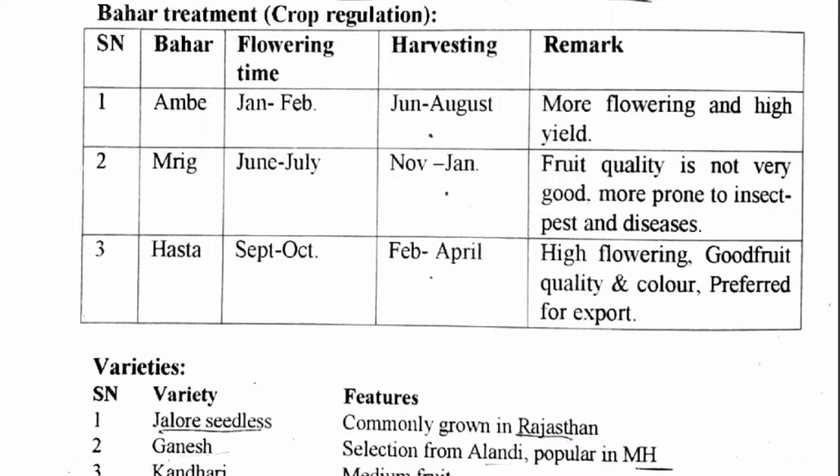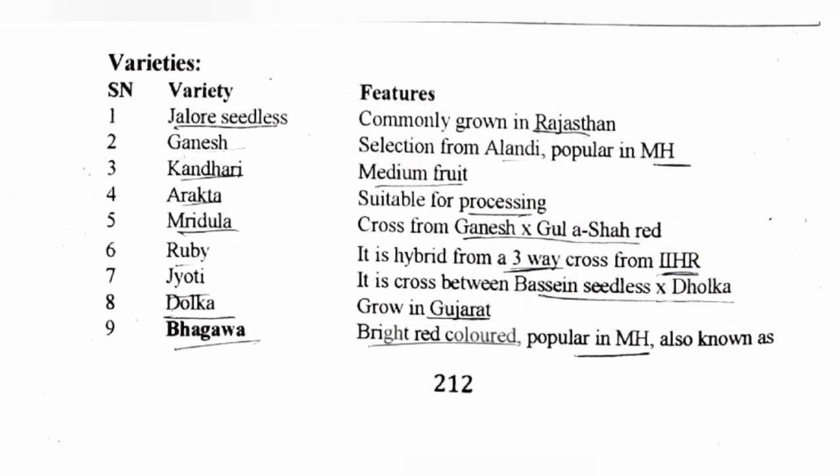Haste bahaar — 'haste' means smile — flowering is in September-October and harvest is in February-April. In this season, flowering is very high, fruit quality is excellent, color is very preferable, so we export fruits from this season.